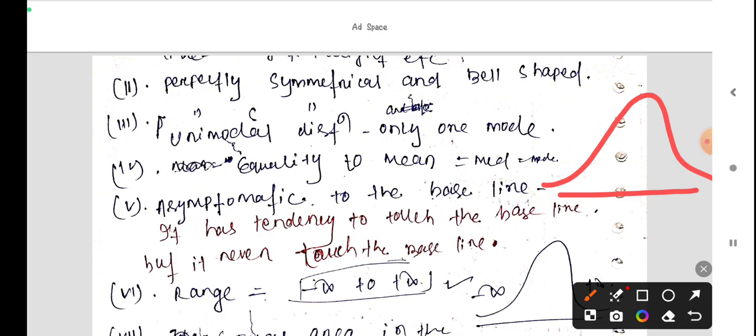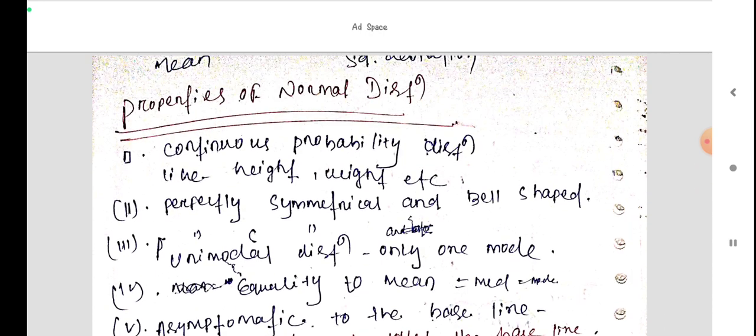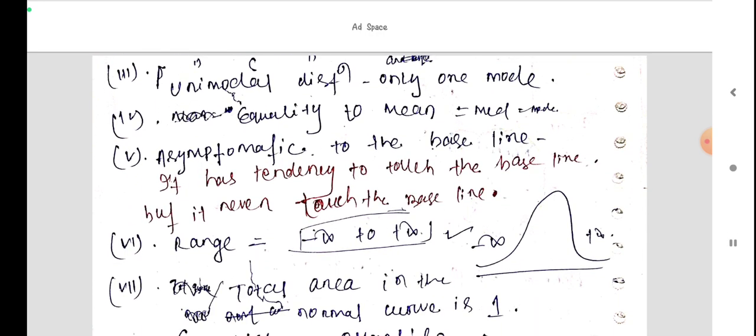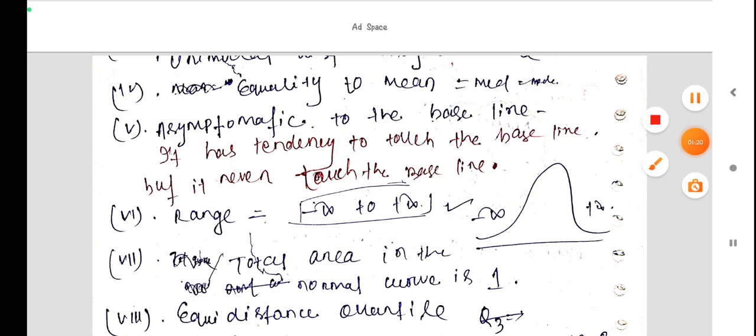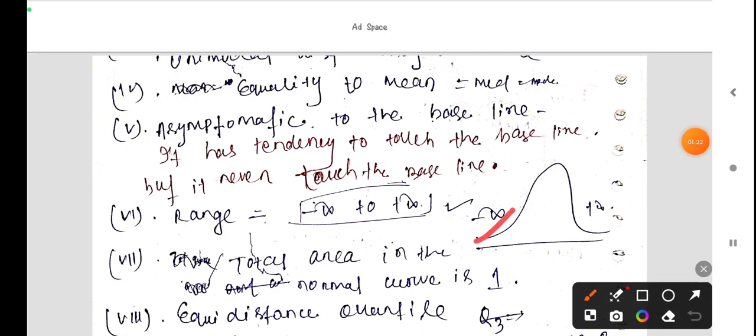There is unimodal distribution, only one mode is there. Normal distribution is unimodal. This is equality, there is equal between mean, mode and median. Mean equals median equals mode, at this point.